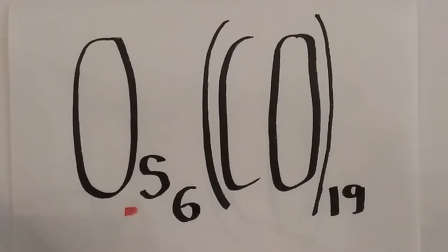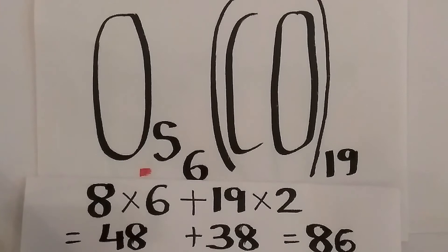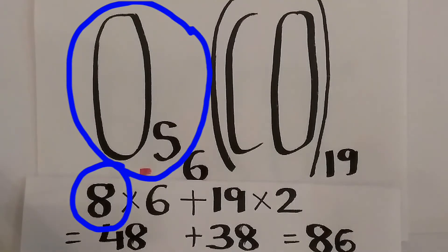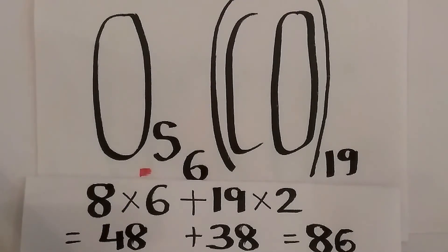Let us take another example. First, let us calculate the total valence electron. Osmium has valence electron 8. Since we have 6 osmium, 8 multiplied by 6.